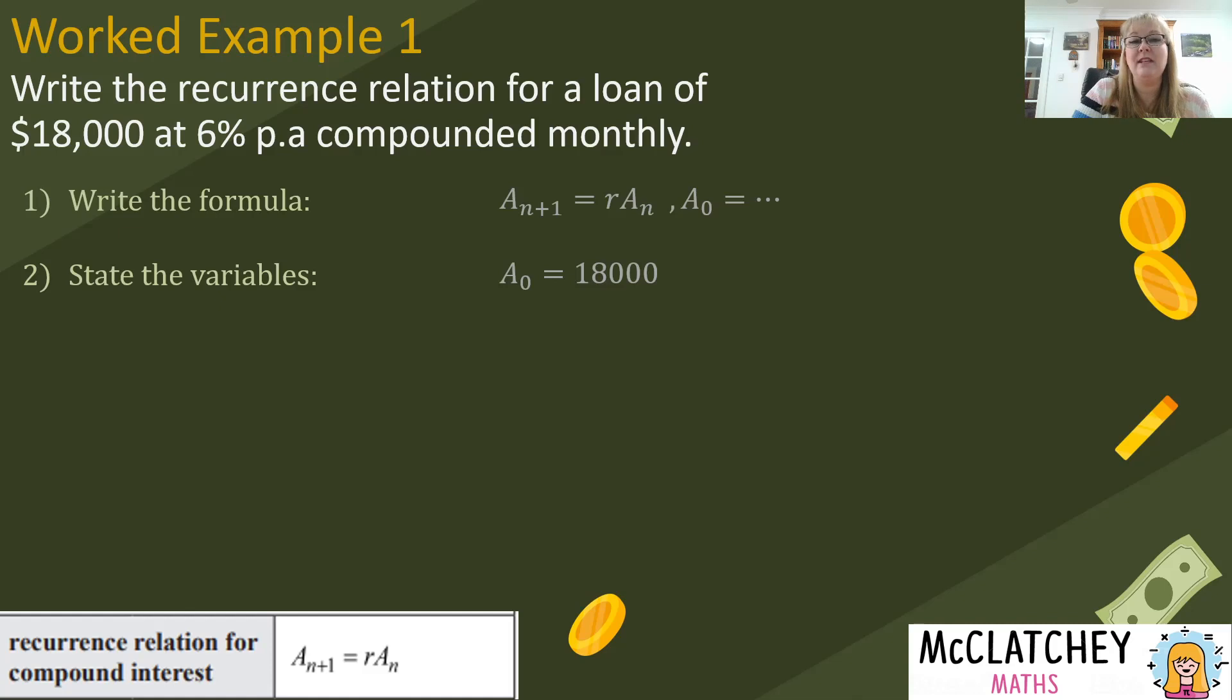So firstly let's start with a subscript 0. We're told in the question the loan was $18,000 so that's the principal of the loan, that's the amount of the loan at the very beginning. So that's the amount at time 0, that is $18,000. Our interest rate, well we're told it's 6% per annum, that's what the PA stands for, per annum meaning per year. So we need to divide that by 12 because it's compounded monthly. So when we divide that by 12 we get 0.005. But now we need to change this into r so we're going to have to add 1, so 1 plus 0.005 gives us 1.005 after we've added the 1.